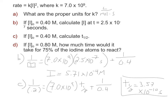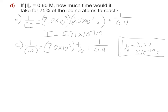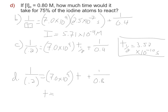Now if the initial iodine is 0.8 M, how much time would it take for 75% to react? We only want to make up numbers if they don't give them to us, and here they gave us 0.8. Also, this is second order, so we can't simply use successive half-lives—that only works for first order. If 75% reacted, the initial is 0.8 and we lost 0.6, leaving a final of 0.2. So 1/0.2 = (7.0×10⁹)t + 1/0.8, and solving gives t = 5.36×10⁻¹⁰ seconds.